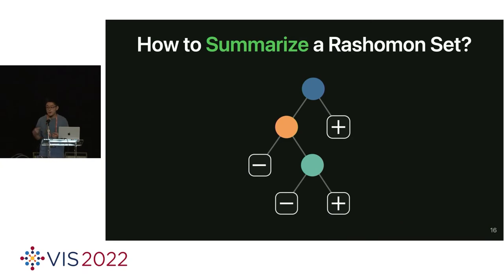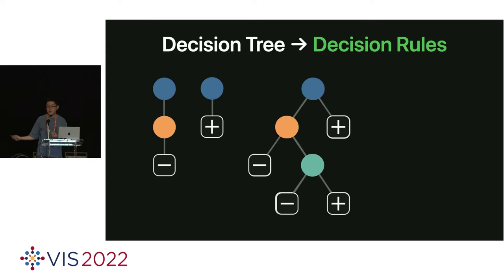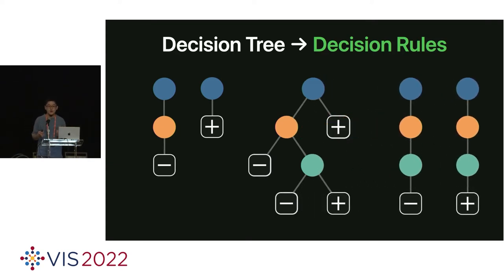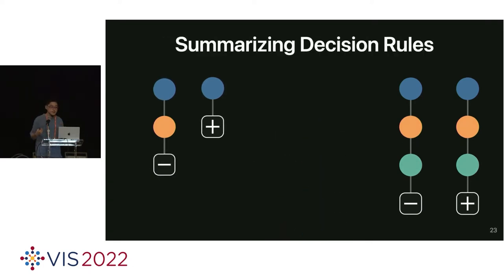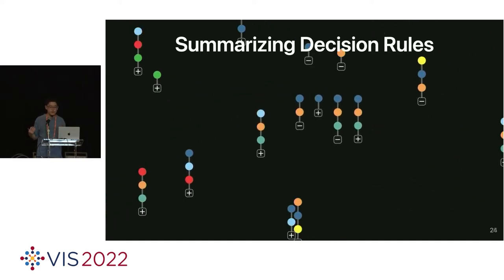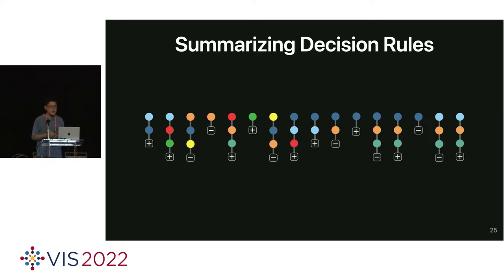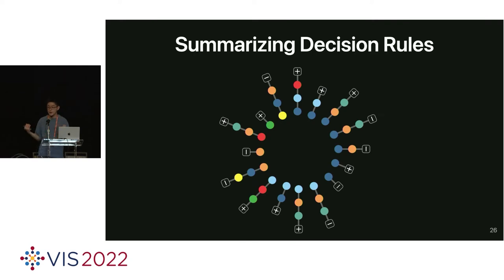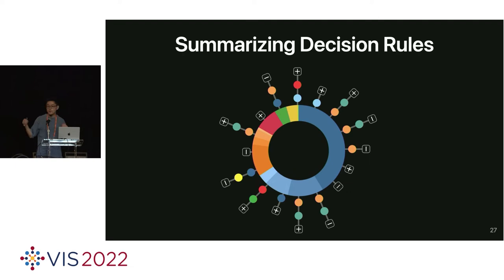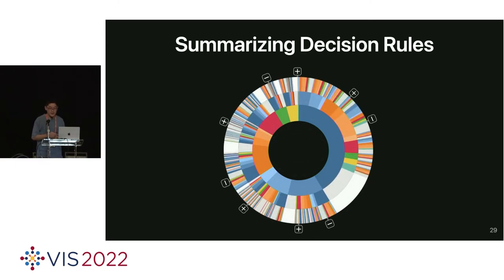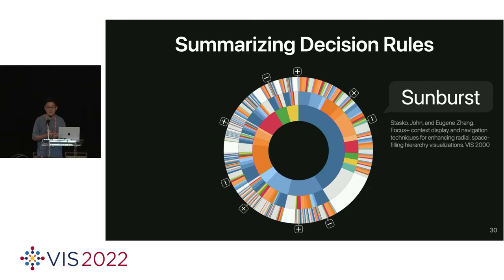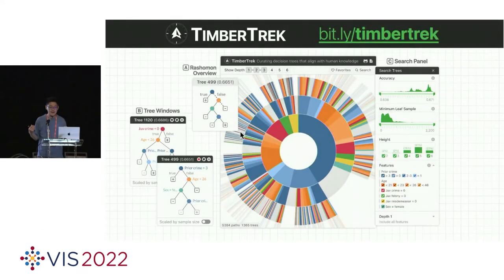When people look at decision trees, they want to interpret them by tracing from the root to the leaf, tracking decision rules. All decision rules capture all the information of a decision tree, so we can get rid of the tree structure. If we have 1,000 decision trees, we'll have 5,000 to 6,000 decision rules. Using a radial layout to put them in a circle and encoding different features with color, we can group nodes using the same feature. We repeat this for different levels, producing a donut chart per level, and eventually a sunburst chart — a very popular visualization technique for hierarchical data. Leveraging this idea, we designed TimberTrack, the first tool to help users explore and curate decision trees. TimberTrack is open source with a public demo.